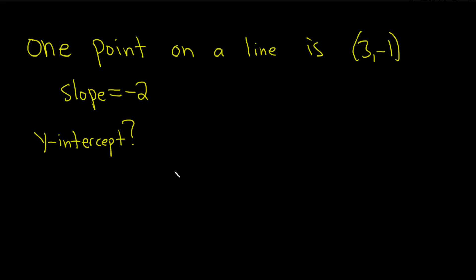Hi everyone. This is an interesting question we have here today. It says one point on a line is (3, -1), and the slope is -2. What is the y-intercept?